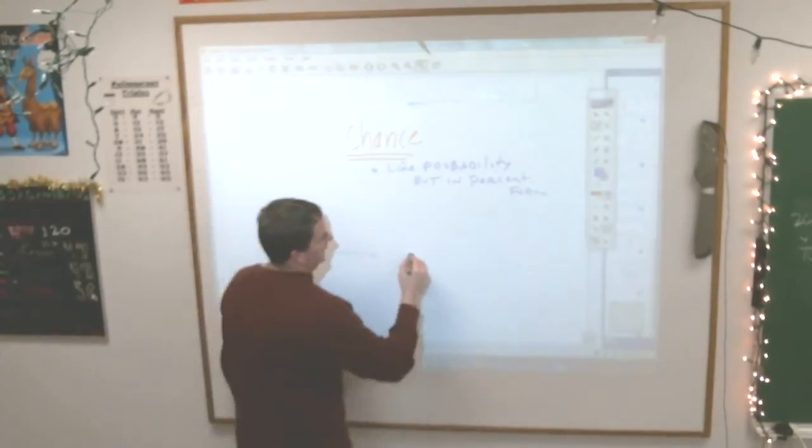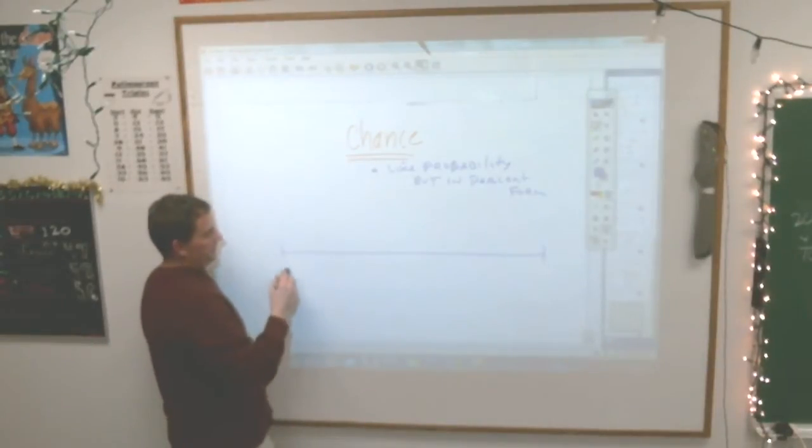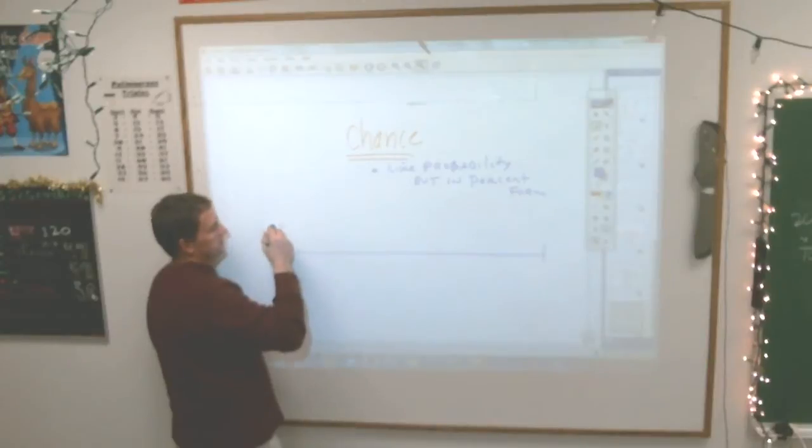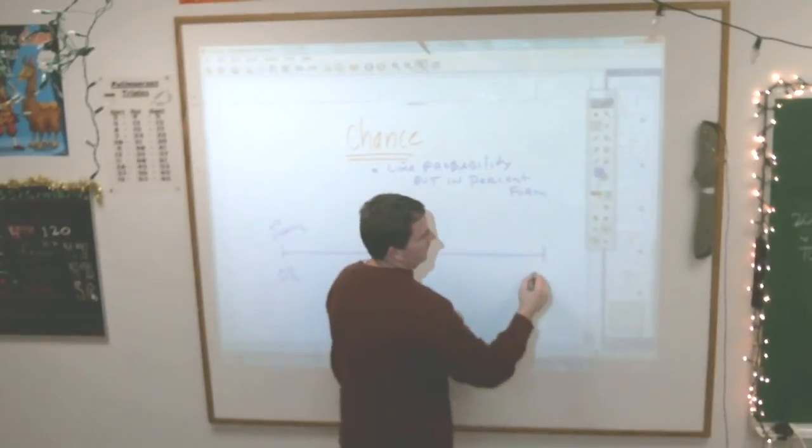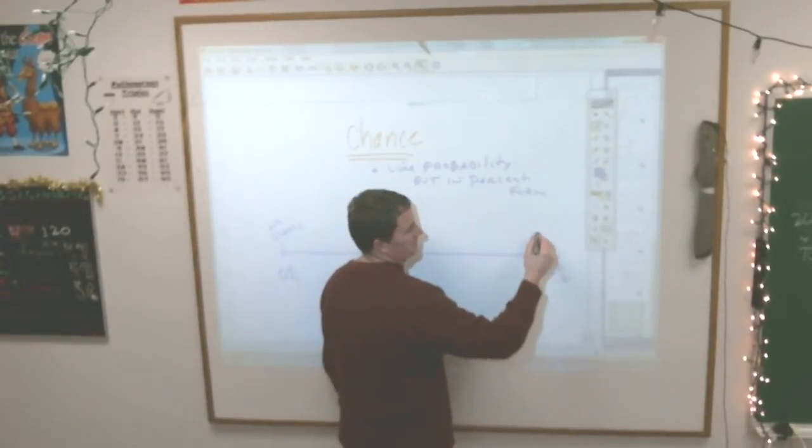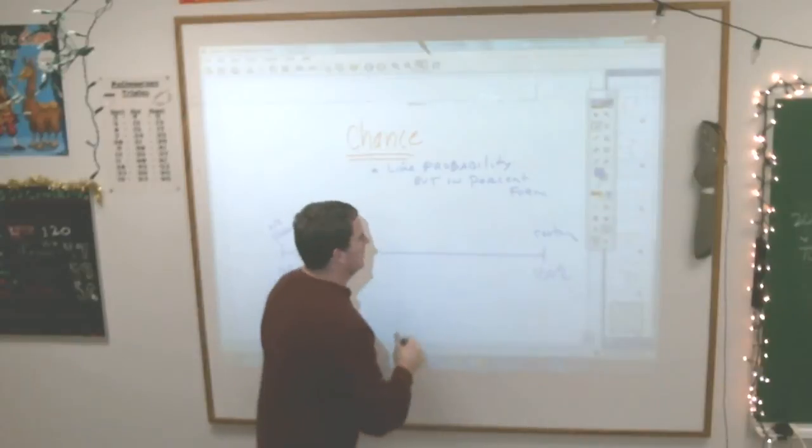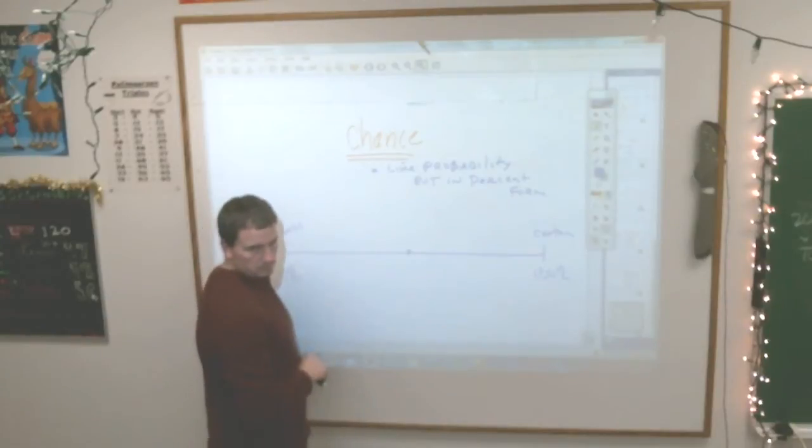And if we have that same line that we get for probability, this would be zero percent, which means there is no chance. Though people say zero percent but it does rain, so that's kind of odd. Over here is 100 percent, which means it is going to happen, which is certain to happen. Here, that's one half, what percent is that? Half is the same as what percent? Fifty percent.